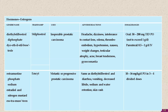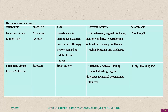Estramustine phosphate is used in metastatic or progressive prostatic carcinoma. The anti-estrogen tamoxifen, already studied, is used in breast cancer especially in post-menopausal women, and as preventive therapy for women at high risk of breast cancer. About 90% of cancer cases involve heredity, so tamoxifen can be given to high-risk patients.